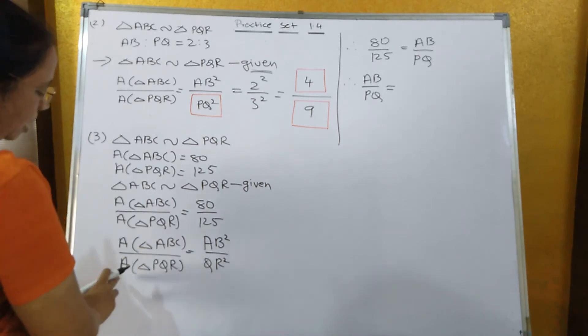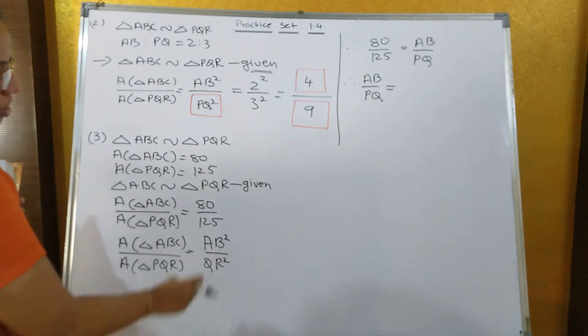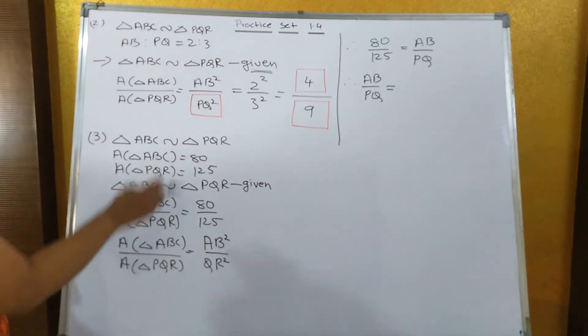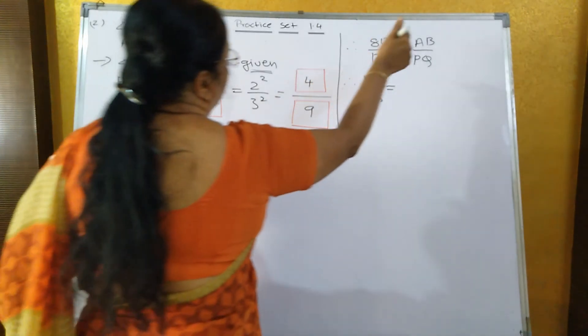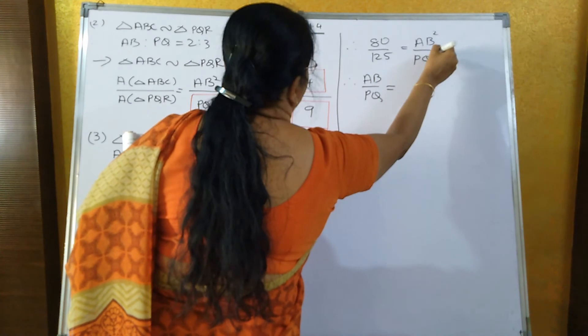Now we know that area of triangle ABC upon area of triangle PQR is equal to AB square upon PQ square. Now what is the area? 80 upon 125, so 80 upon 125 is equal to AB square upon PQ square.